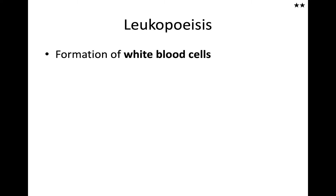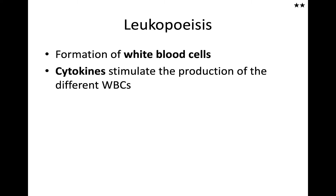Leukopoiesis is the production of white blood cells from those hemopoietic stem cells. The process of leukopoiesis is controlled by cytokines that are released into the bloodstream, communicating with those stem cells to cause them to differentiate into one of the many different types of blood cells.